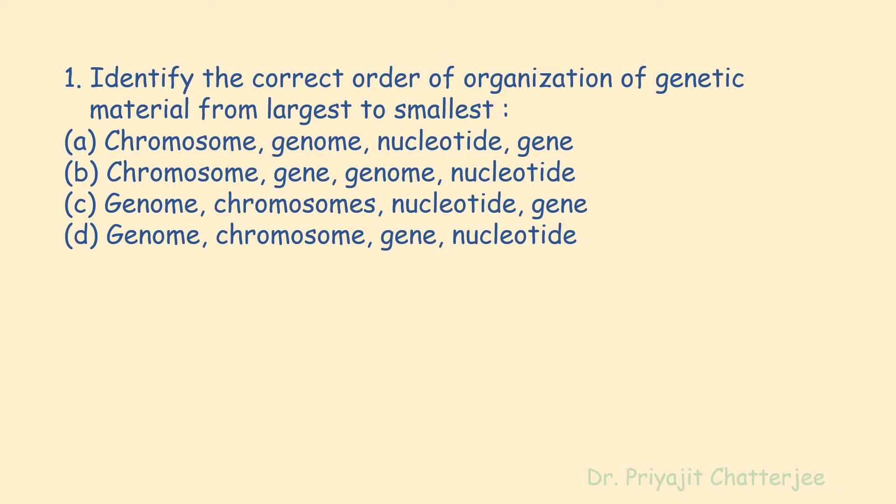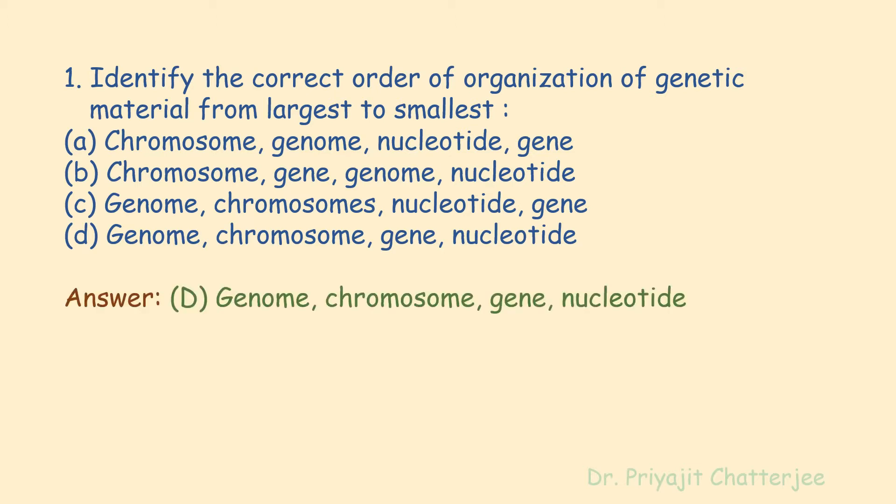The first question is: identify the correct order of organization of genetic material from largest to smallest. The options are: A) chromosome, genome, nucleotide, gene; B) chromosome, gene, genome, nucleotide; C) genome, chromosomes, nucleotide, gene; and D) genome, chromosome, gene, nucleotide. The correct answer is option D: genome, chromosome, gene, nucleotide.